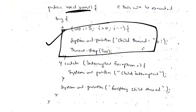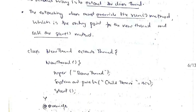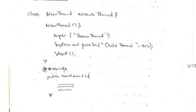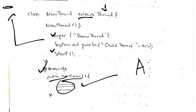Inside the void run function, the logic is defined — for example, a for loop. The same applies when extending Thread using 'class NewThread extends Thread'. Here we use the 'super' keyword to call the parent class, use 'start' to begin execution, and override 'public void run' to define what the thread does, such as adding two numbers.